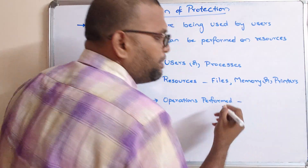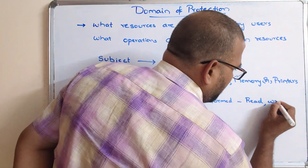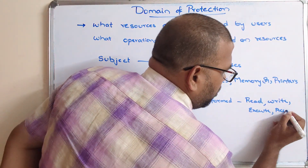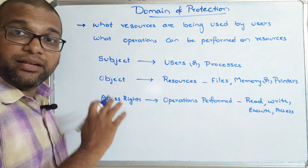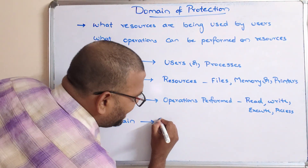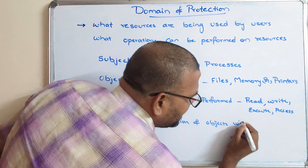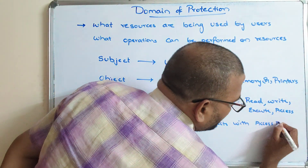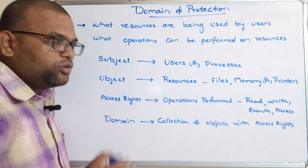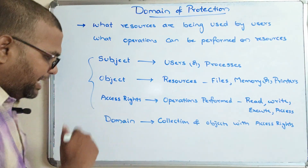Access rights refer to the operations that can be performed on resources. Operations on files include read, write, or execute; and accessing the printer — all these come under access rights. Domain is a collection of objects with access rights — a collection of resources and their access permissions is called a domain.